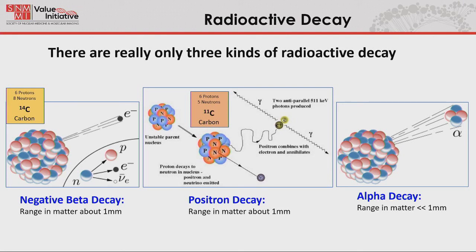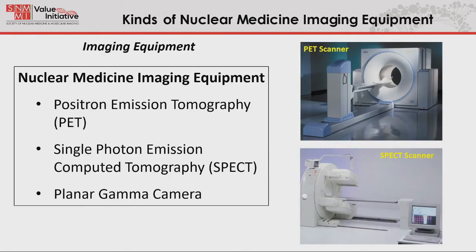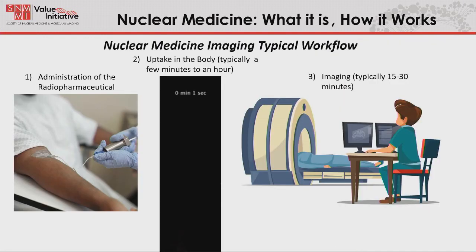There are three kinds of radioactive decay. Negative beta decay occurs when there are too many neutrons. Positron decay occurs when there are too many protons. And there's alpha decay, which we won't discuss today. The particles emitted — just an electron or a positron — only travel about a millimeter or so. We don't worry about those so much, but in almost all cases we get a gamma ray at the same time. Gamma rays are very penetrating, traveling way more than a millimeter and making it outside the body where we detect them with our scanners. For positron emitters we use a PET scanner; for beta decay we use a SPECT scanner. PET is usually slightly higher resolution and sensitivity, but both provide great imaging.